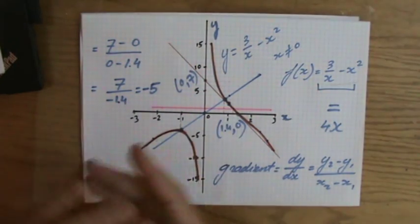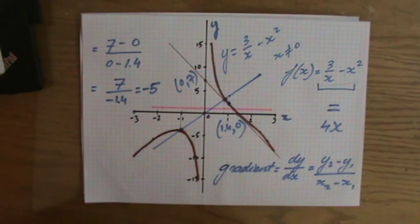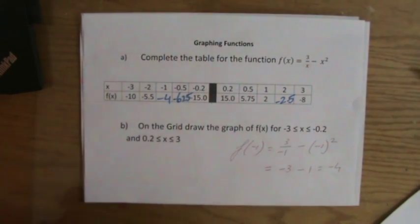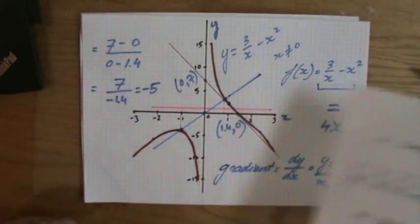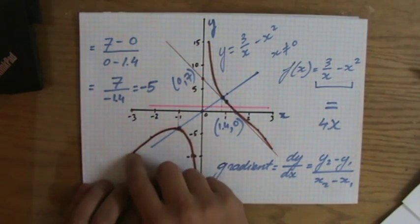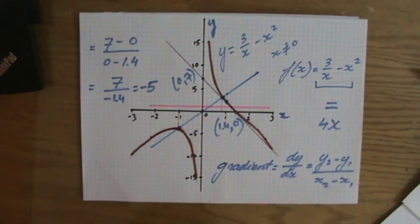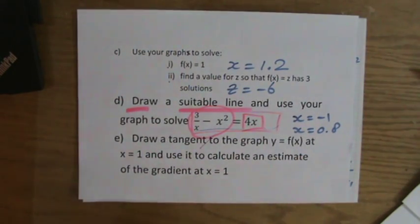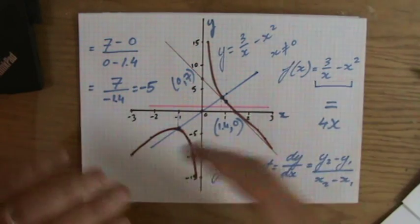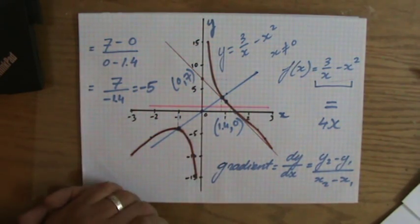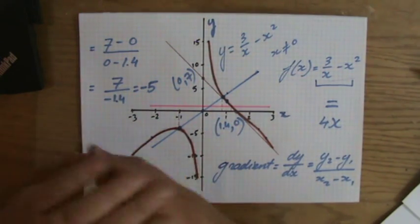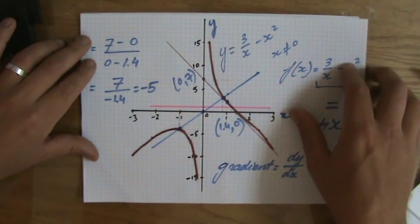This is an IGCSE or GCSE maths question. You get loads of points for completing the table by evaluating your function, plotting coordinates carefully, drawing the smooth curve, and then answering the graph questions — drawing horizontal lines, a diagonal line, and a tangent. Everyone can do at least 80% of this. Hopefully that was useful; find me at explainingmaths.com or on Facebook or Twitter. See you later!